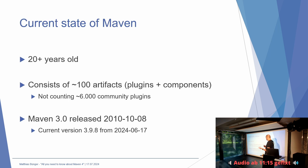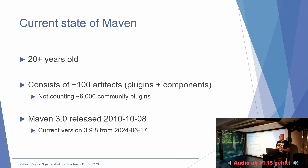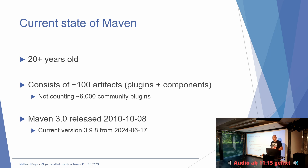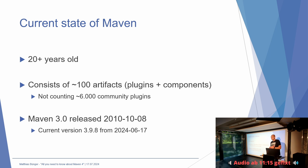Maven ist über 20 Jahre alt. Erster Prototyp von Maven 1 war von 2001, also fast 25 Jahre sogar. Maven ist relativ groß - das, was das Maven-Team betreut, sind ungefähr 100 Artefakte, bestehend aus Plugins und Komponenten. Im Maven Central gibt es natürlich noch tausende andere Plugins von Bibliotheken. Inzwischen liegen im Maven Central irgendwie über 650.000 verschiedene Bibliotheken. Und das aktuelle Major Release, Maven 3, ist jetzt auch schon fast 15 Jahre her. Die aktuelle Version 3.9 ist die letzte vom letzten Monat.